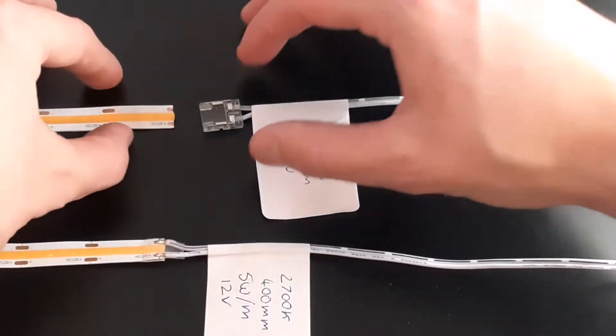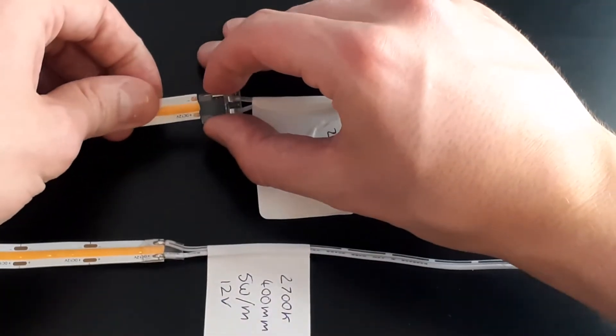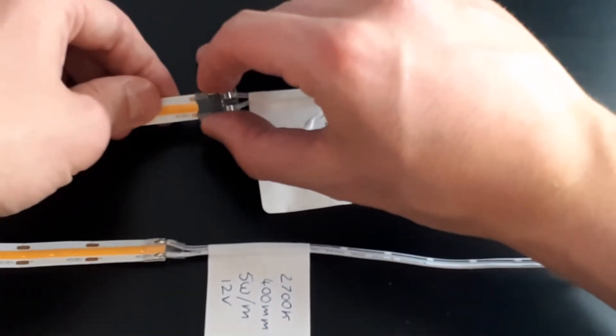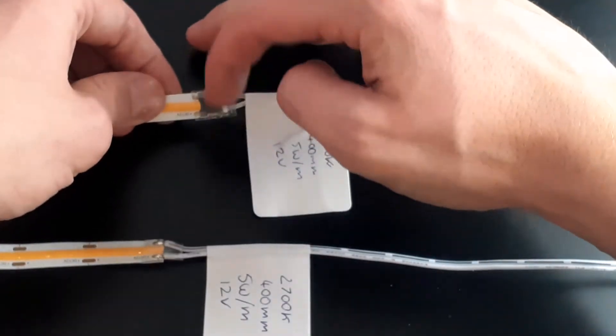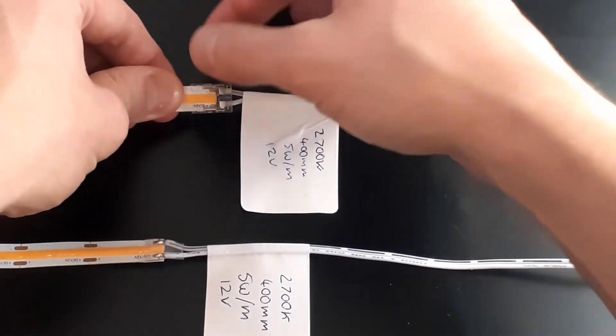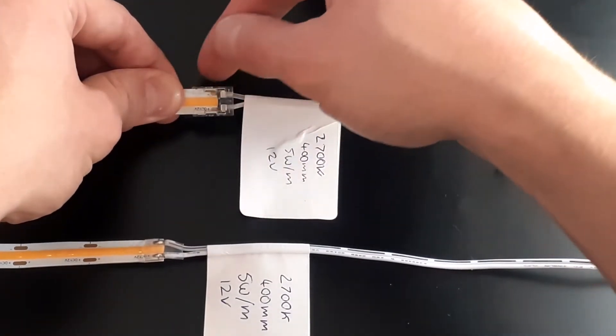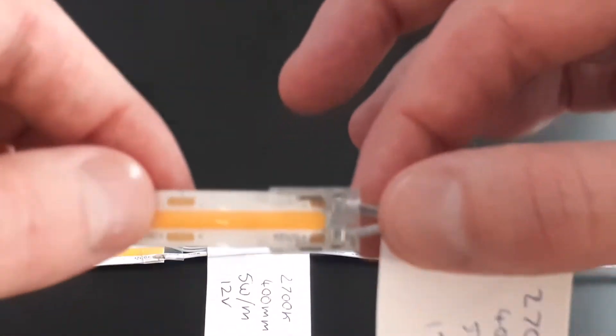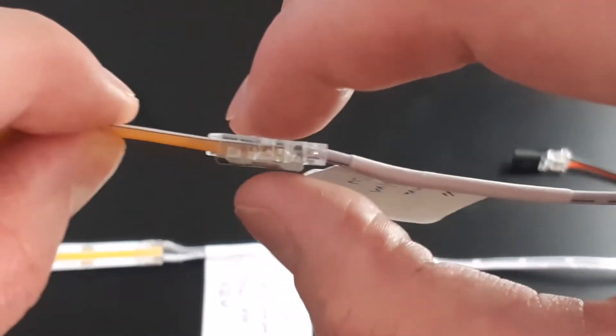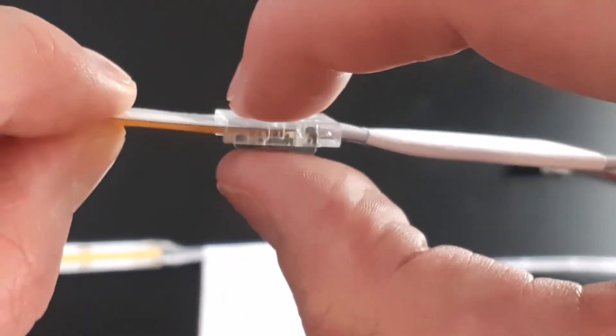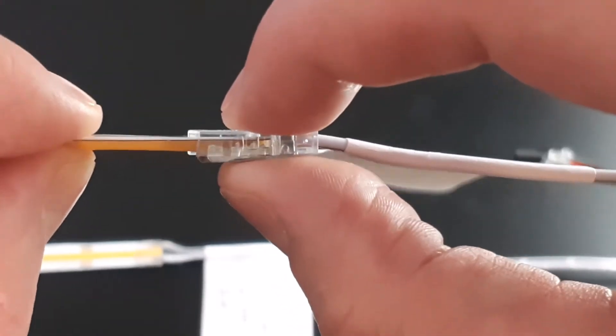As you can see, we simply push this 10 mil slotted connector, 12 mil width, into the tape like this, or the tape would go into the connector should I say. That would create a secure connection and as you can see here we have some pins that would just get pushed down to strengthen that connection.